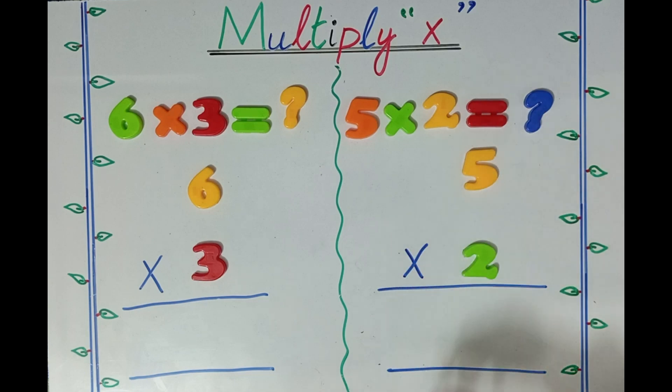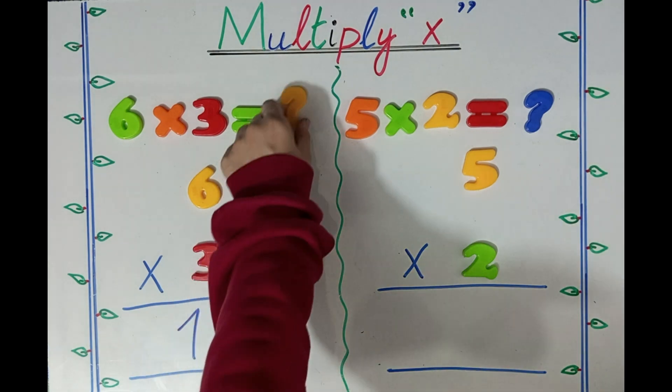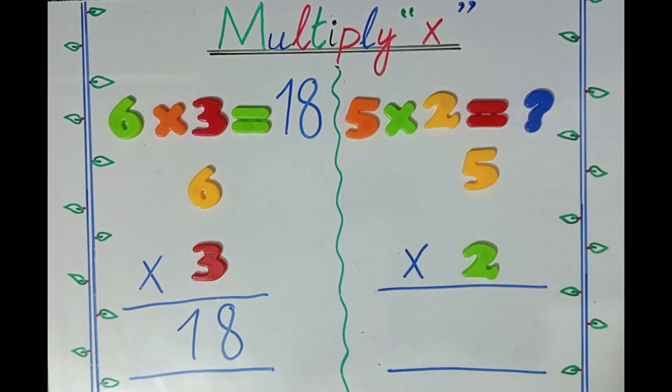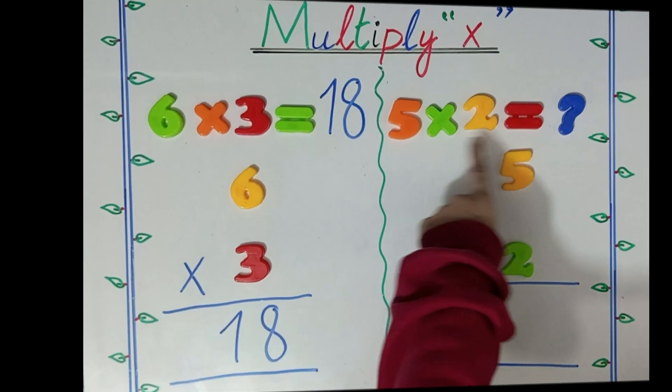6 times 3 equals 18. The answer is 18: one, eight. Here's the second question: 5 multiplied by 2.